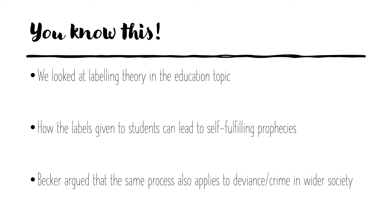Year 10 or year 11, you already know this. We've done labelling theory — we did this on education. If you can cast your mind back about six months or so, we looked at how teachers give students labels and that sometimes that can lead to a self-fulfilling prophecy where students live up to their label. We looked at the work of Howard Becker, and Becker's work was not done in schools — it was done in deviant groups. Becker believed that the same process applies to crime and deviance in wider society, that the label an act is given can lead to more deviance through a self-fulfilling prophecy. So Becker believed that labelling actually causes deviance.